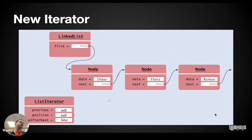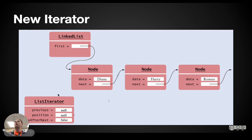So for each little chunk of code we write, we're going to look at a picture too. Here's an example of a linked list: first refers to the first node with element Diana, next refers to the second node with Harry, next refers to the third node with Romeo, and so on. When we make a new list iterator, previous is null, position is null, and isAfterNext is false — that's where we're starting from.